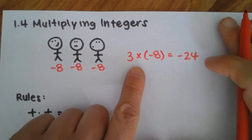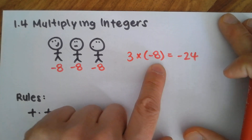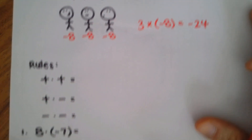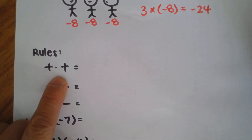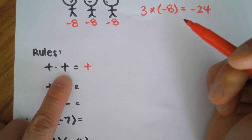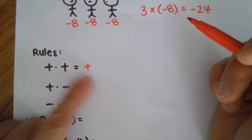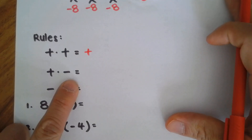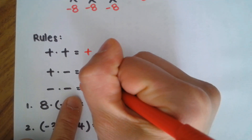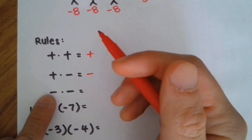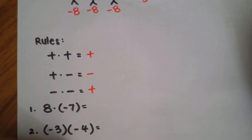This right here is a positive number, and we multiplied it by a negative number, giving us a negative value. So let's take a look at the rules for multiplying integers. First rule: a positive times a positive gives you a positive number — like two times six is positive 12, or three times four is positive 12. If you have a positive times a negative, that's going to be a negative. And if you have a negative times a negative, that's going to give you a positive. These are the three rules you need to remember when multiplying integers.